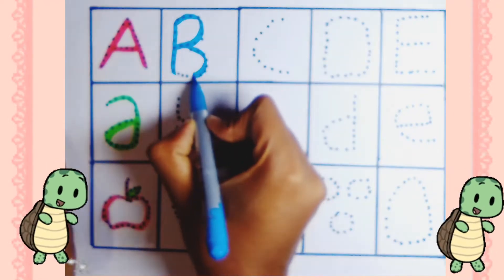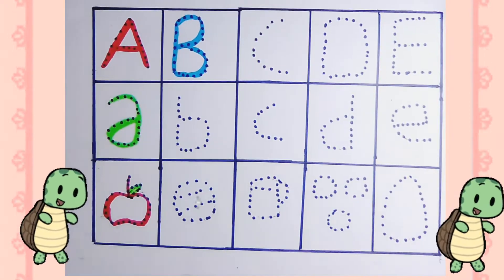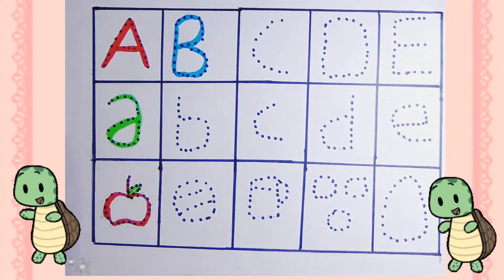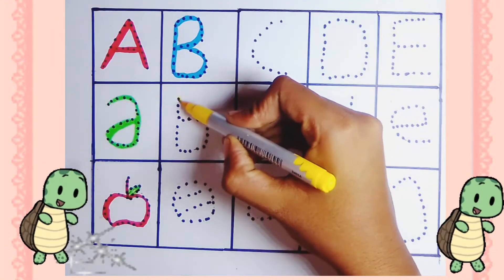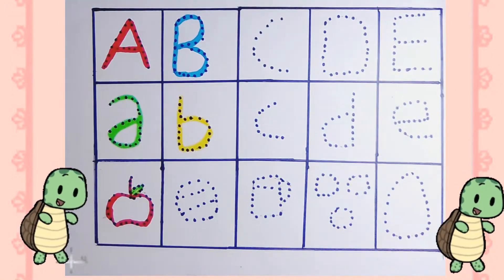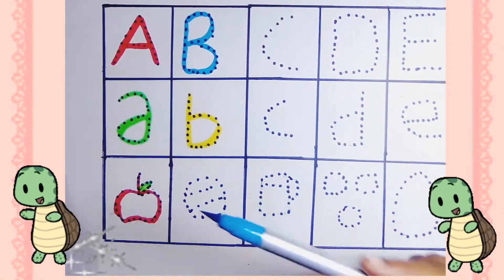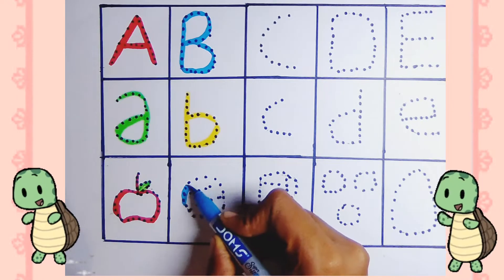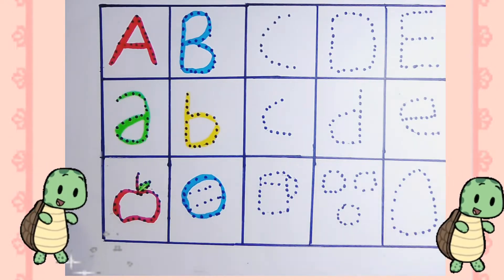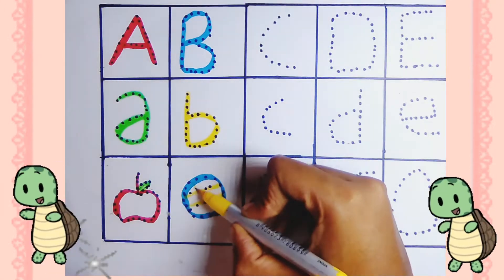A, B, C, D, E, F, G, H, I, J, K, L, M, N, O, P, Q, R, S, T, U, V, W, X, Y, and Z. Now you know your ABCs, next time won't you sing with me.